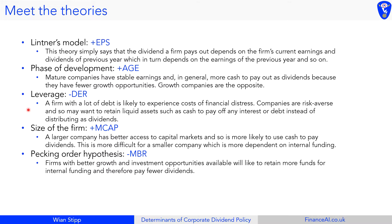The next one is leverage. The more debt a firm has, the more it worries about paying off debt through interest and eventually paying off the principal as a whole. Companies with very high leverage are going to experience costs of financial distress. So this theory basically predicts that the more leveraged the company, the less it's going to pay out as dividends.